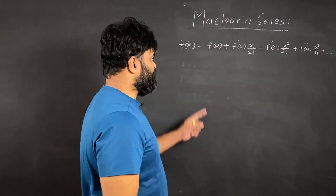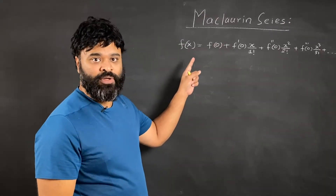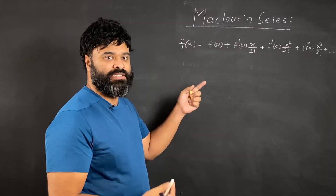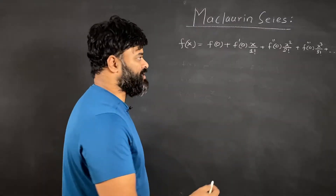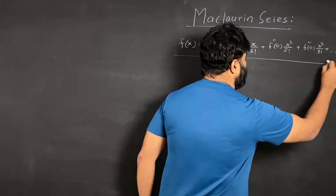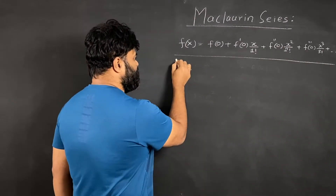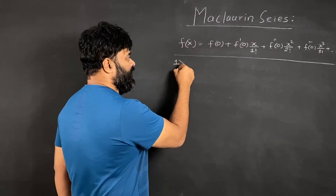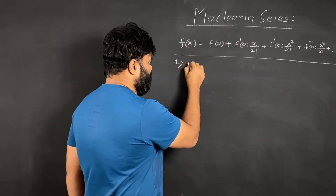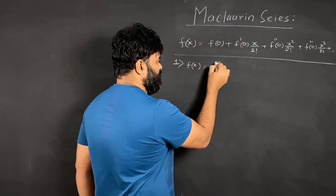This expression is called the Maclaurin series, and now we will see how to use this expression to find the power series of a function. I'm going to take my first example — the first function that I want to write the Maclaurin series for is f of x equals e raised to x.